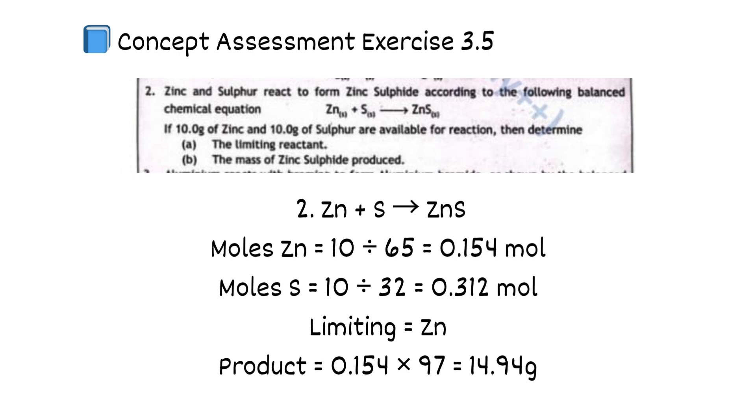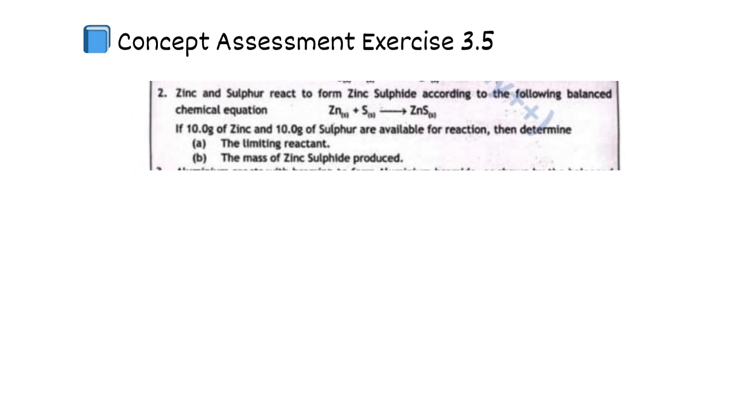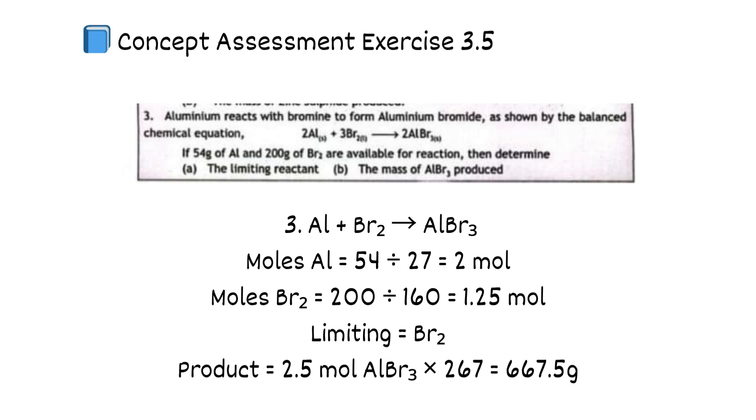Zn plus S equals ZnS. Moles Zn equals 10 divided by 65 equals 0.154 mole. Moles S equals 10 divided by 32 equals 0.312 mole. Limiting reactant equals Zn. Product equals 0.154 times 97 equals 14.94 grams. Al plus Br2 equals AlBr3. Moles Al equals 54 divided by 27 equals 2 mole. Moles Br2 equals 200 divided by 160 equals 1.25 mole. Limiting equals Br2. Product equals 2.5 mole AlBr3 times 267 equals 667.5 grams.